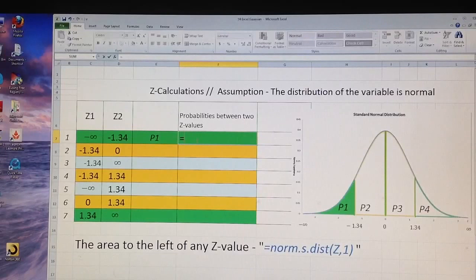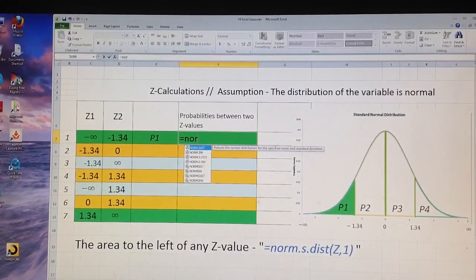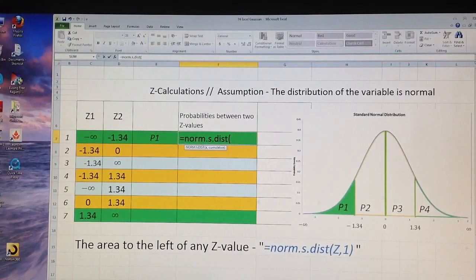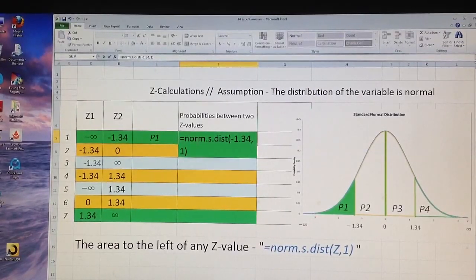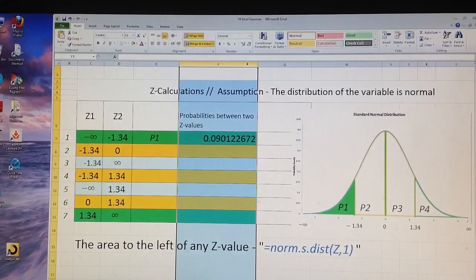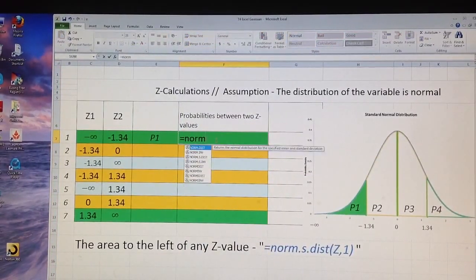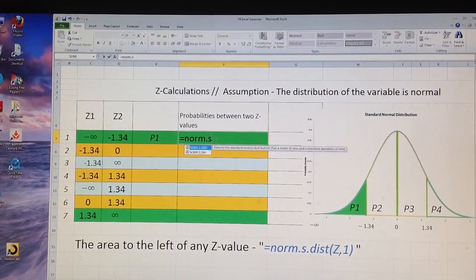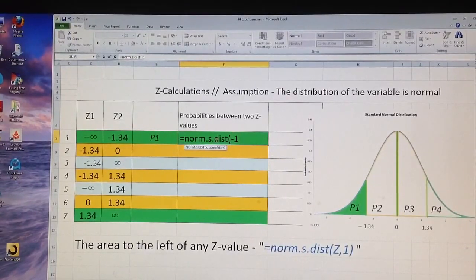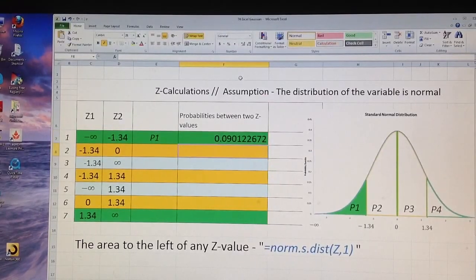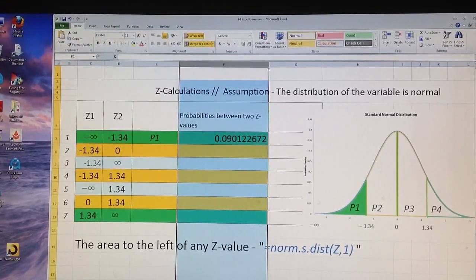It is equal, the function is on the bottom, normal, norm dot s dot dist, and then negative 1.34 comma 1. Let me enlarge this a little bit even more. And once again, equal norm dot s dot dist of negative 1.34 comma 1, and this probability as we already know I showed you is almost 9%.